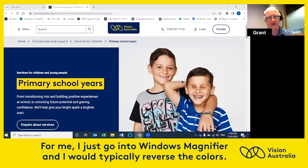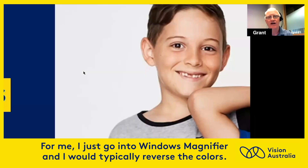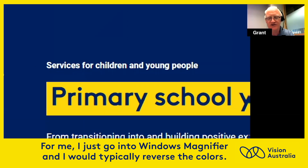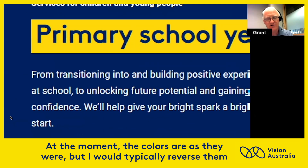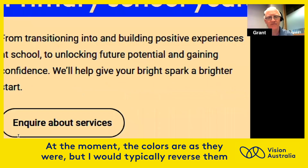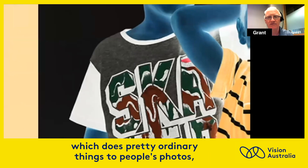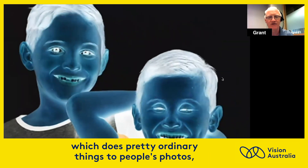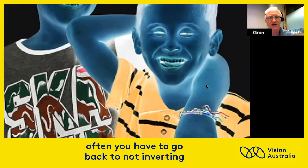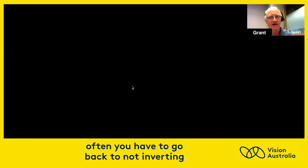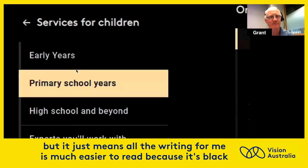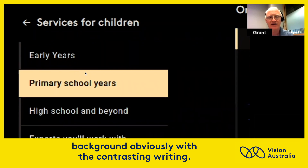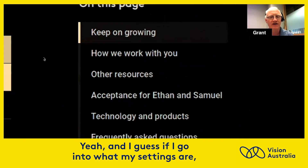So for me, I just go into Windows Magnifier and I would typically reverse the colors. At the moment the colors are as they were, but I would typically reverse them, which does pretty ordinary things to people's photos. So often you have to go back to not inverting. But it just means all the writing for me is much easier to read because it's a black background with contrasting writing.